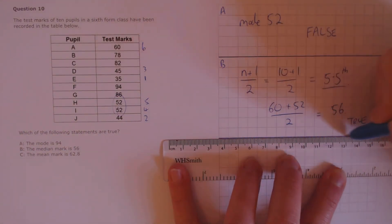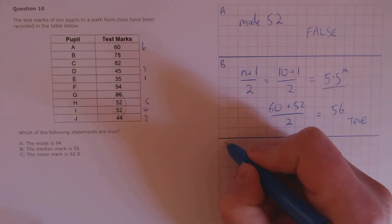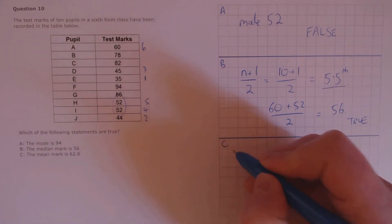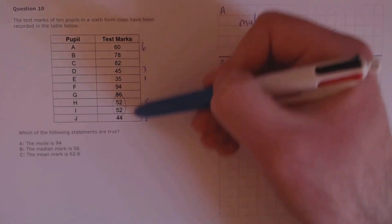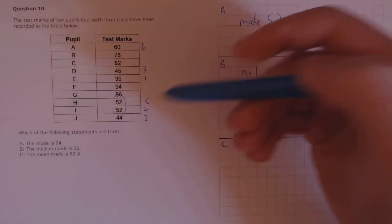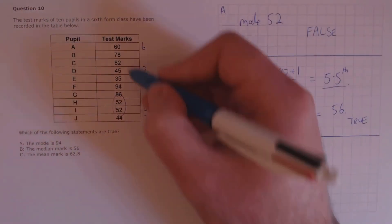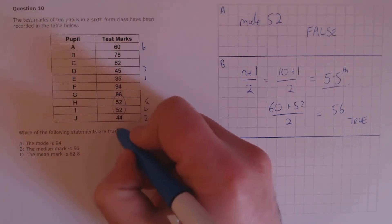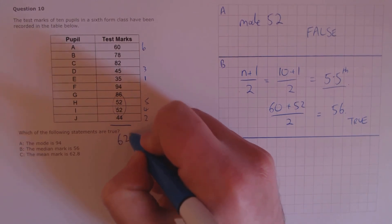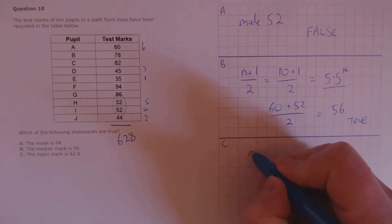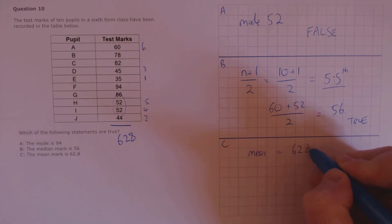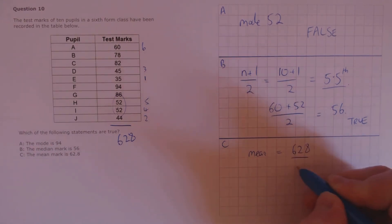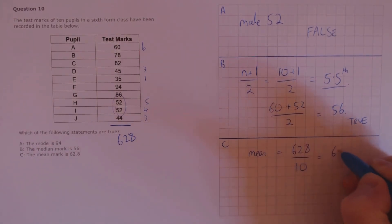For statement C, the claim is the mean mark is 62.8. To calculate the mean, we add up all the test marks, which gives us 628, and then divide by the number of students, 10. 628 divided by 10 is 62.8. That statement is true. So the answers are: false, true, and true.